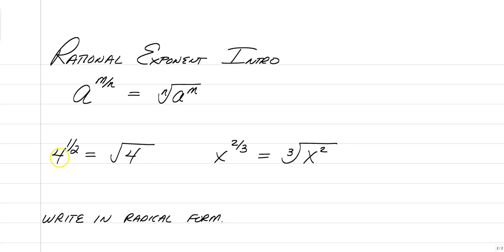So if we were to take 4 raised to the 1 half power, that's technically the square root of 4 to the first power. If we were going to take x to the 2 thirds power, that's technically x squared and we're going to take the cube root of x squared.